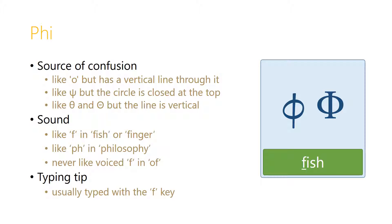The letter Phi can look like an O, although it has a vertical line through it. It can look like Psi, although notice that the circle is closed at the top where it isn't in Psi. And it can look a lot like Theta, although in both the lower and upper cases, notice that the line goes vertically through the circle, not horizontally. The sound of Phi is like F in 'fish' or 'finger,' or like the PH in 'philosophy' — and actually the PH sound in 'philosophy' originally derives from this letter. It is never the voiced F as in 'of.' So just like Theta is always TH as in 'thin' and never TH as in 'the,' Phi is always F and never the voiced equivalent. It's usually typed with the F key, which makes sense given its sound.